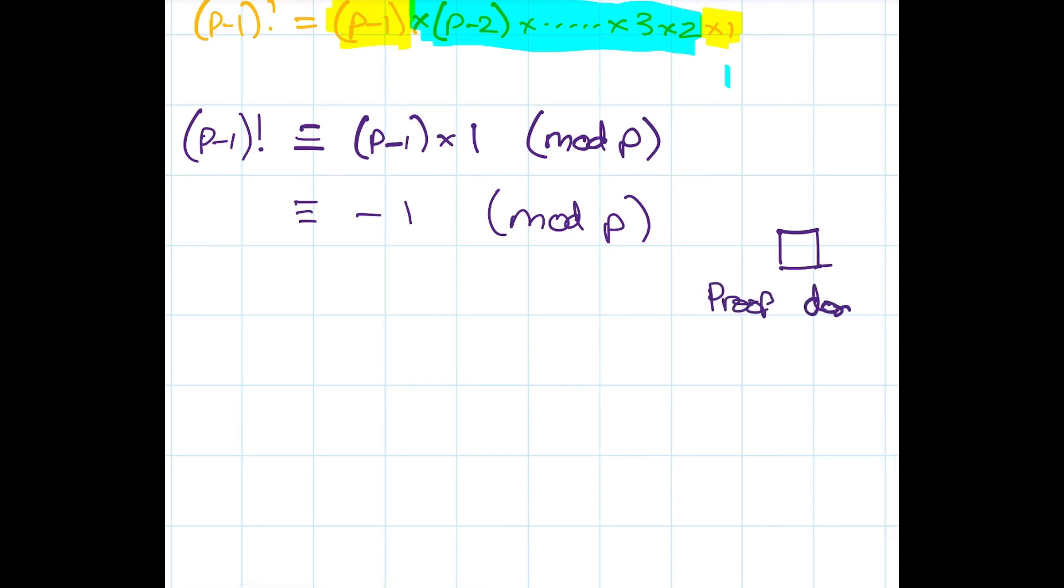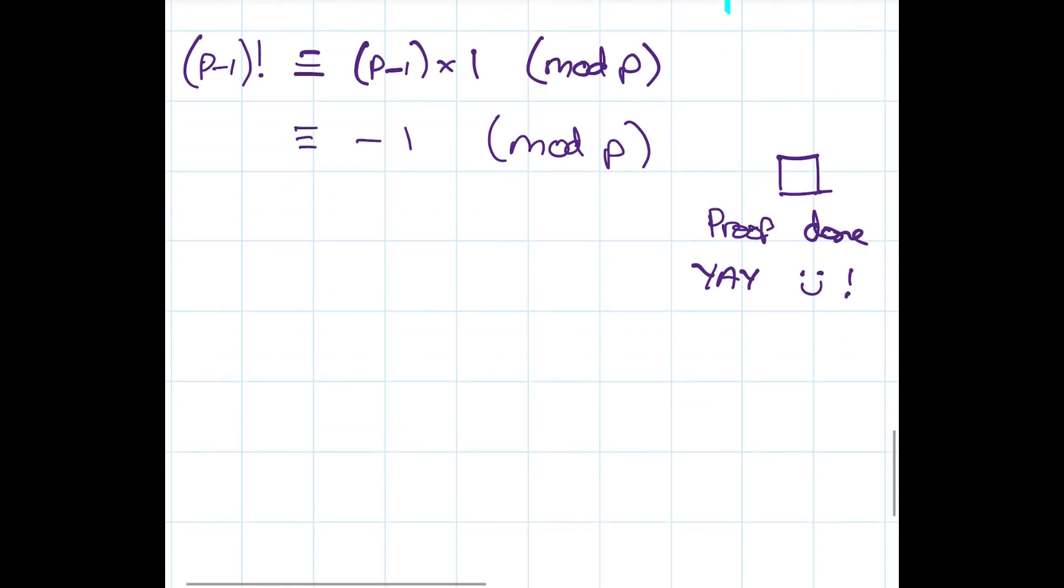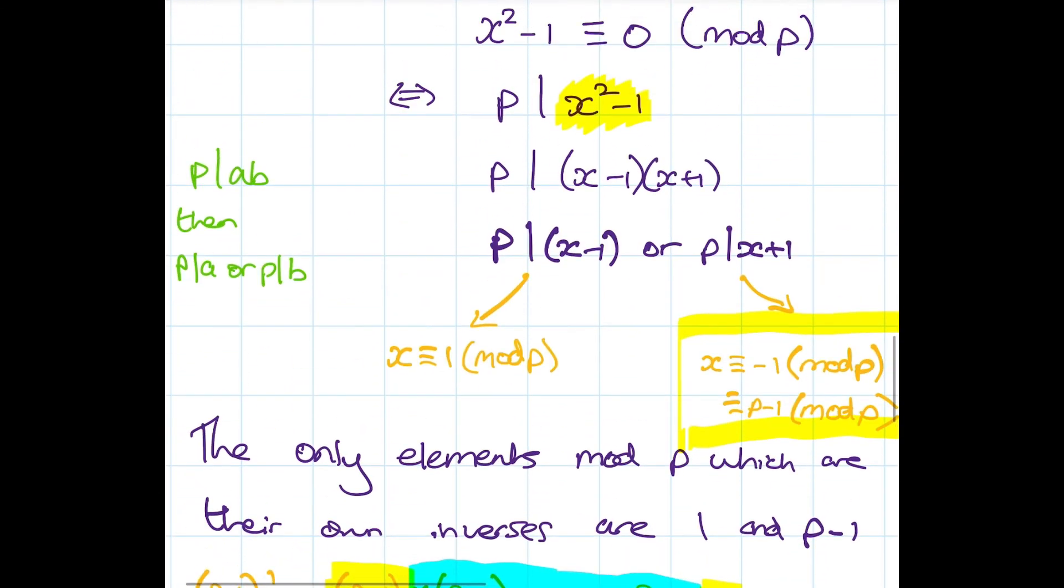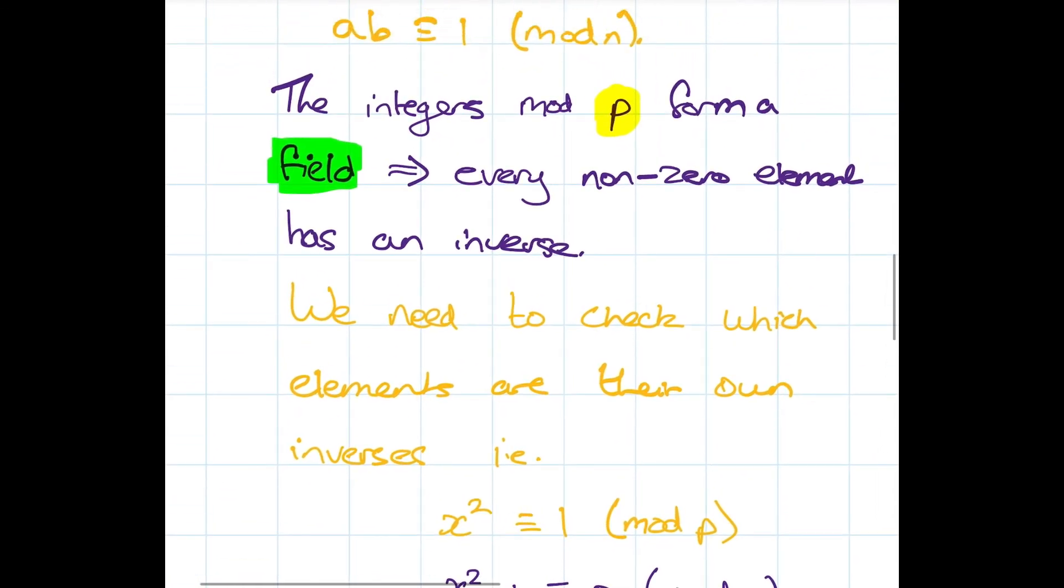Proof done, yay! We've proved that P minus 1 factorial is congruent to minus 1 mod p, but don't forget this is only for p prime. If p is not a prime here, this does not work at all because we use the fact that it's a prime here and also here where the integers mod p form a field.